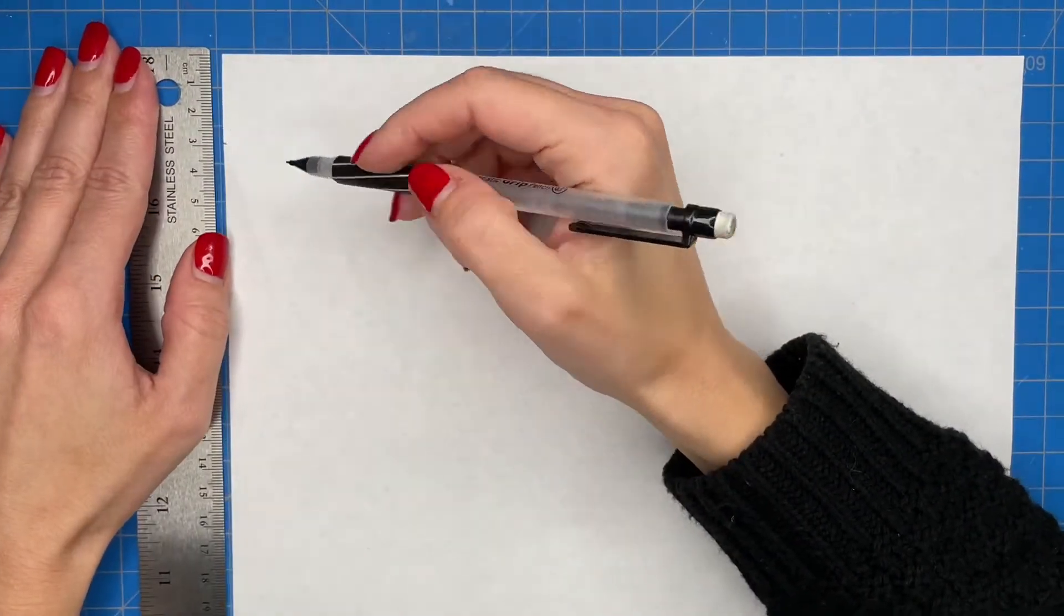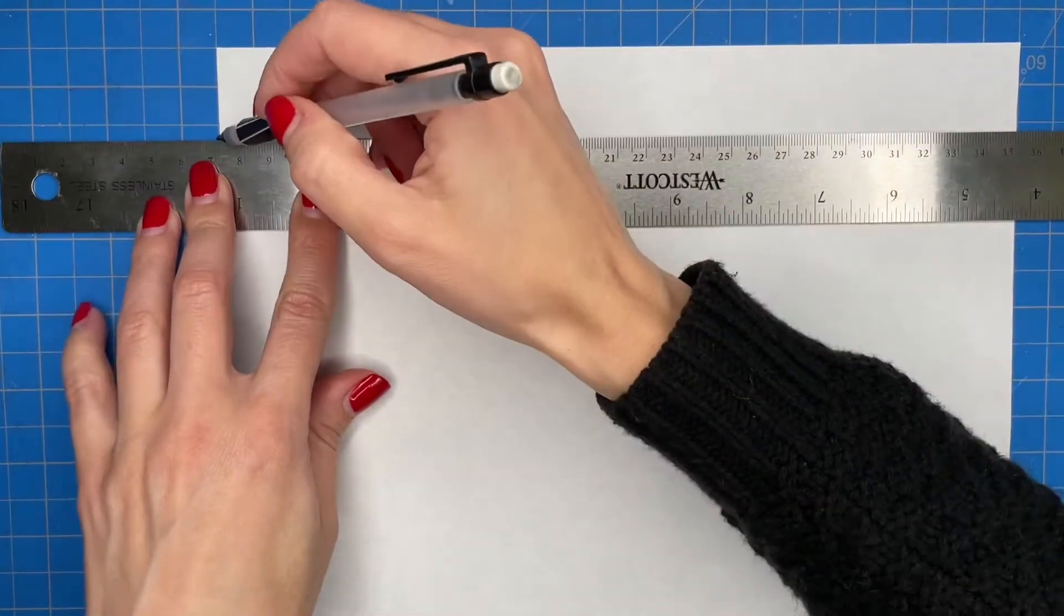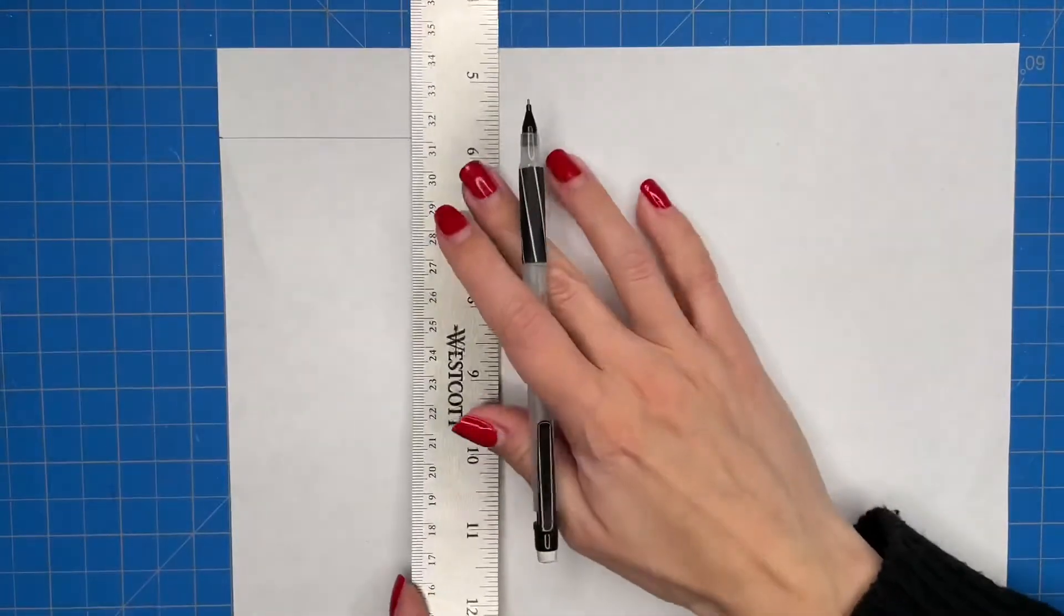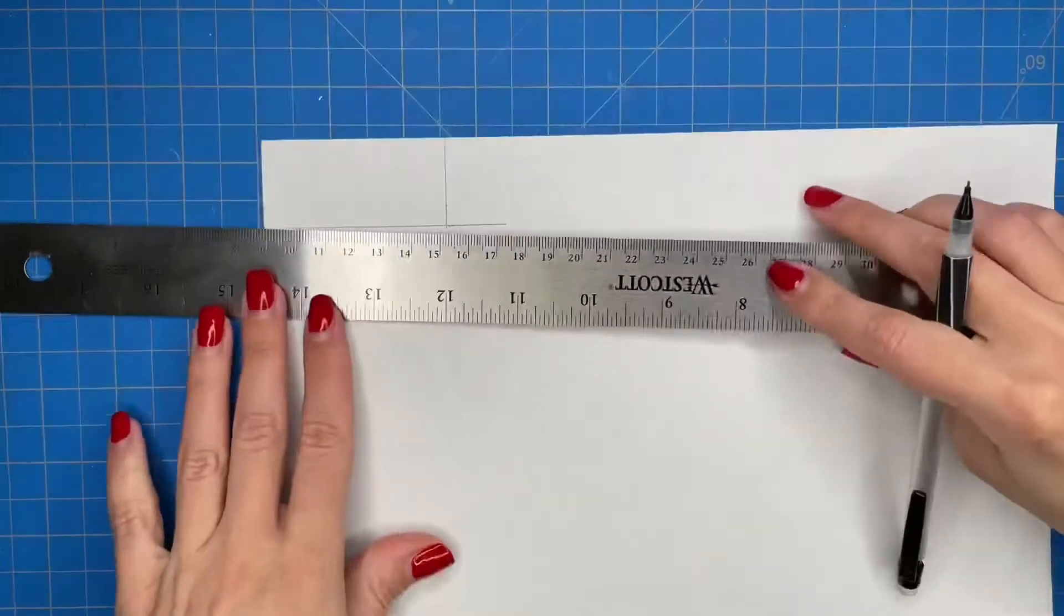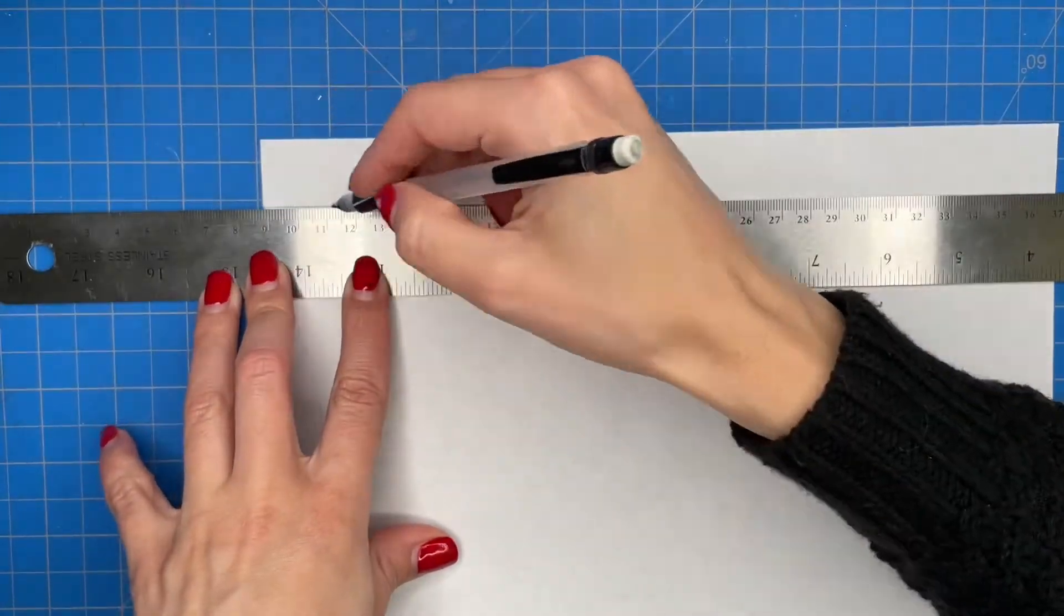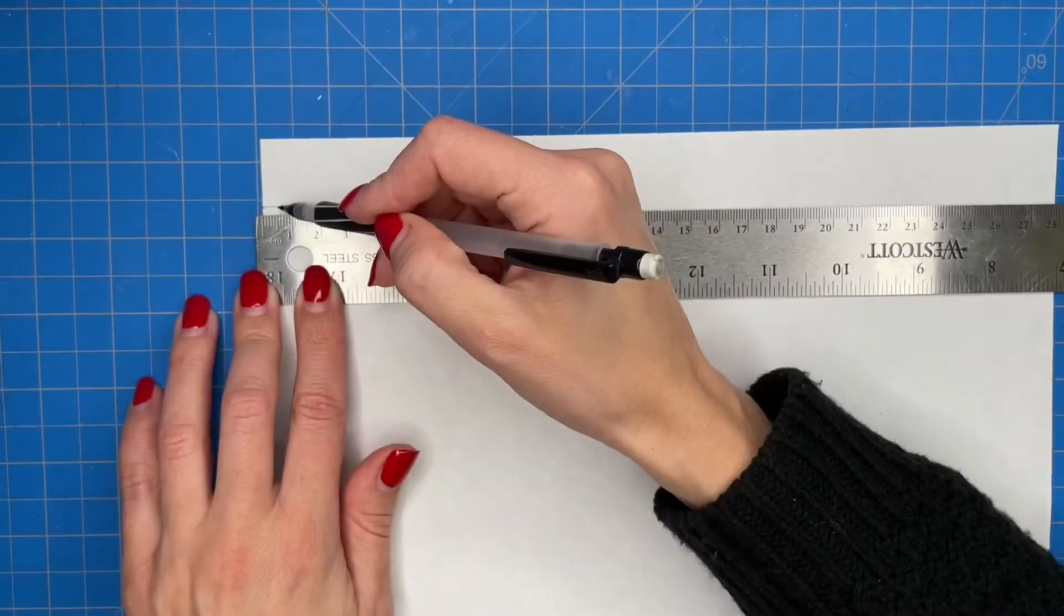I start off by making a template just using regular white paper so I measure it out to the size of the gift bag that I want. You don't have to use a template but if you plan on making a lot of gift bags, using a template is great for uniformity.